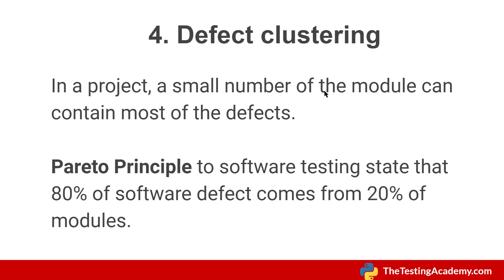The fourth principle is defect clustering. In any project, a small number of modules contain most of the bugs. It follows the Pareto principle — 80% of software defects come from 20% of the modules. For example, if you have 100 test cases, 20% of them will give you the bugs while 80% will pass and show expected behavior. This is the law that explains defect clustering.